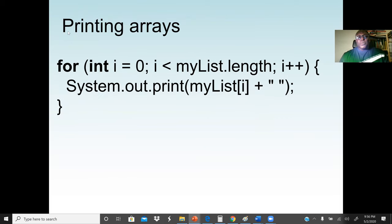Next is printing arrays. If I want to print the values in an array, the best way is to use a for loop. All these examples use loops because an array has a lot of values and we perform the same operation on each one. To print all elements, use the index starting from 0 to less than the size. Then system.out.print myList[i]. If i is 0, that's the first element, then second, up to the end.